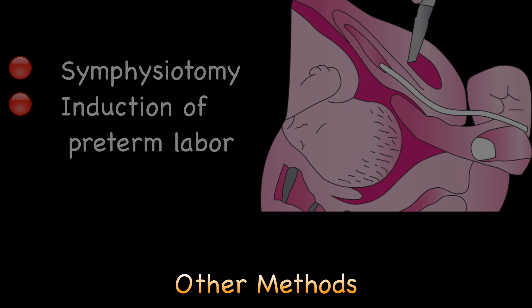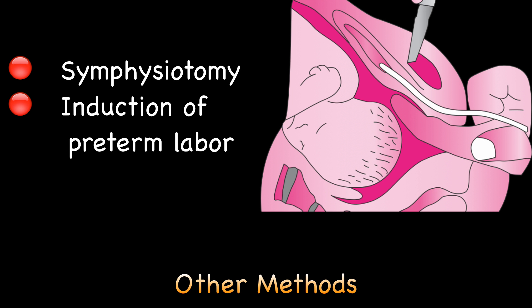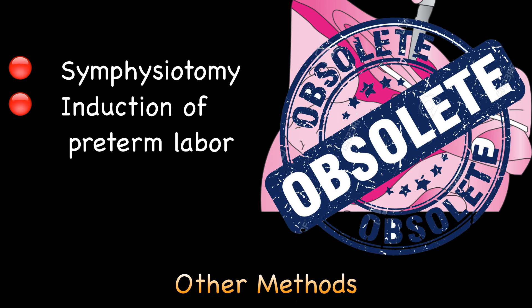Other obsolete methods of management of contracted pelvis are symphysiotomy and induction of preterm labour. In the past, division of ligaments holding the pubic bones at the pubic symphysis was done to enlarge the available anteroposterior diameter of the pelvis. It has no place in modern obstetrics, although in certain parts of Africa it is still done. Induction of preterm labour was frequently advocated in the past but has no place in current obstetric practice.